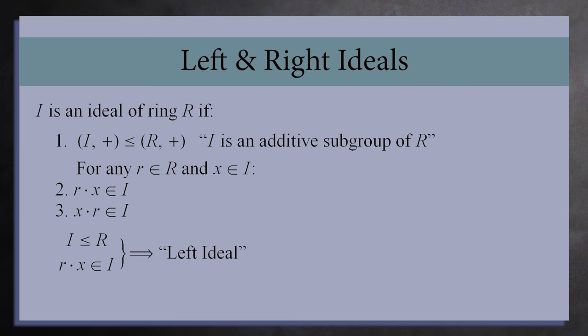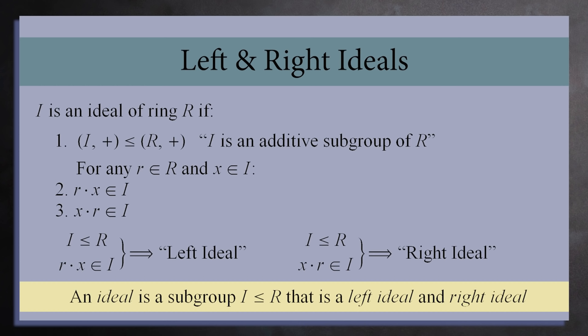If only the first property is met, we call i a left ideal. And if only the second property is met, then we call i a right ideal. So if you're feeling somewhat daring, you could say that an ideal is a subgroup i that is both a left and right ideal.